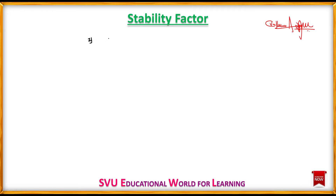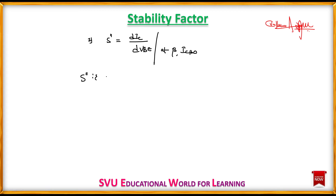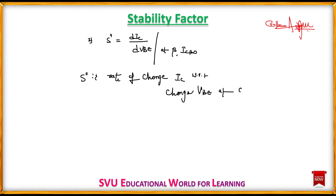S-double-dash is the third stability factor. It is equal to the rate of change of collector current with respect to change in VBE, at constant beta and ICBO. This measures how the collector current changes with respect to the base-to-emitter voltage while keeping beta and ICBO constant.